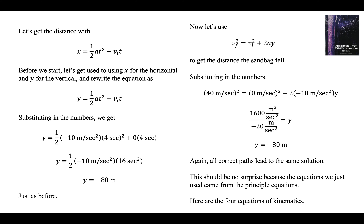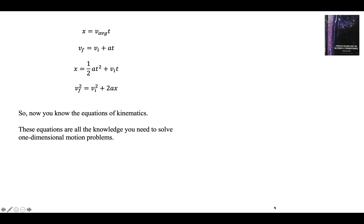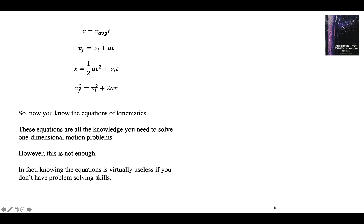Here are the four equations of kinematics: X equals V_average times T; V_final equals V_initial plus AT; X equals one-half AT² plus V_initial T; and V_final² equals V_initial² plus 2AX. So now you know the equations of kinematics. These equations are all the knowledge you need to solve one-dimensional motion problems — but this is not enough. It is not even close. Knowing the equations is virtually useless if you don't have problem-solving skills.